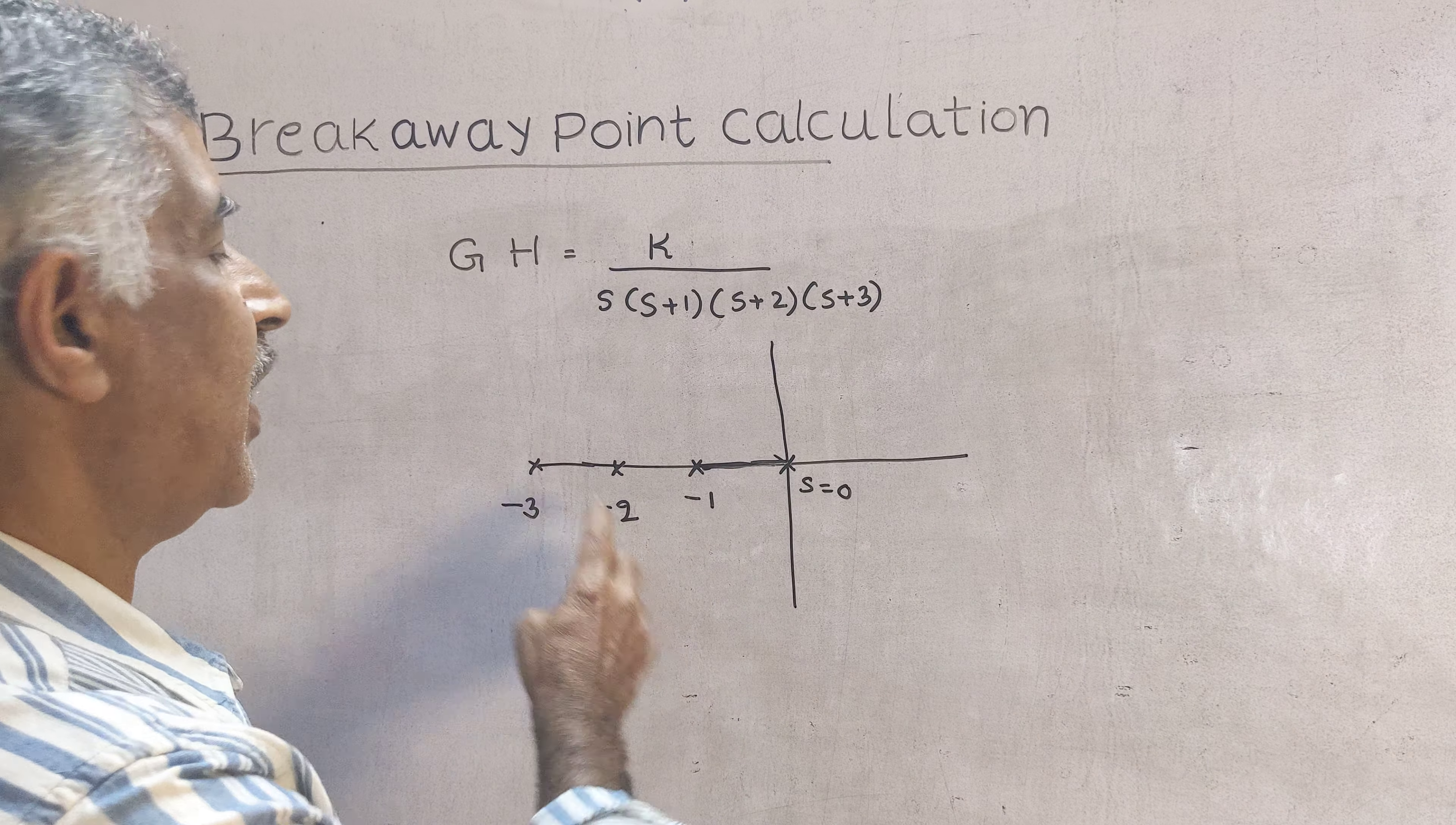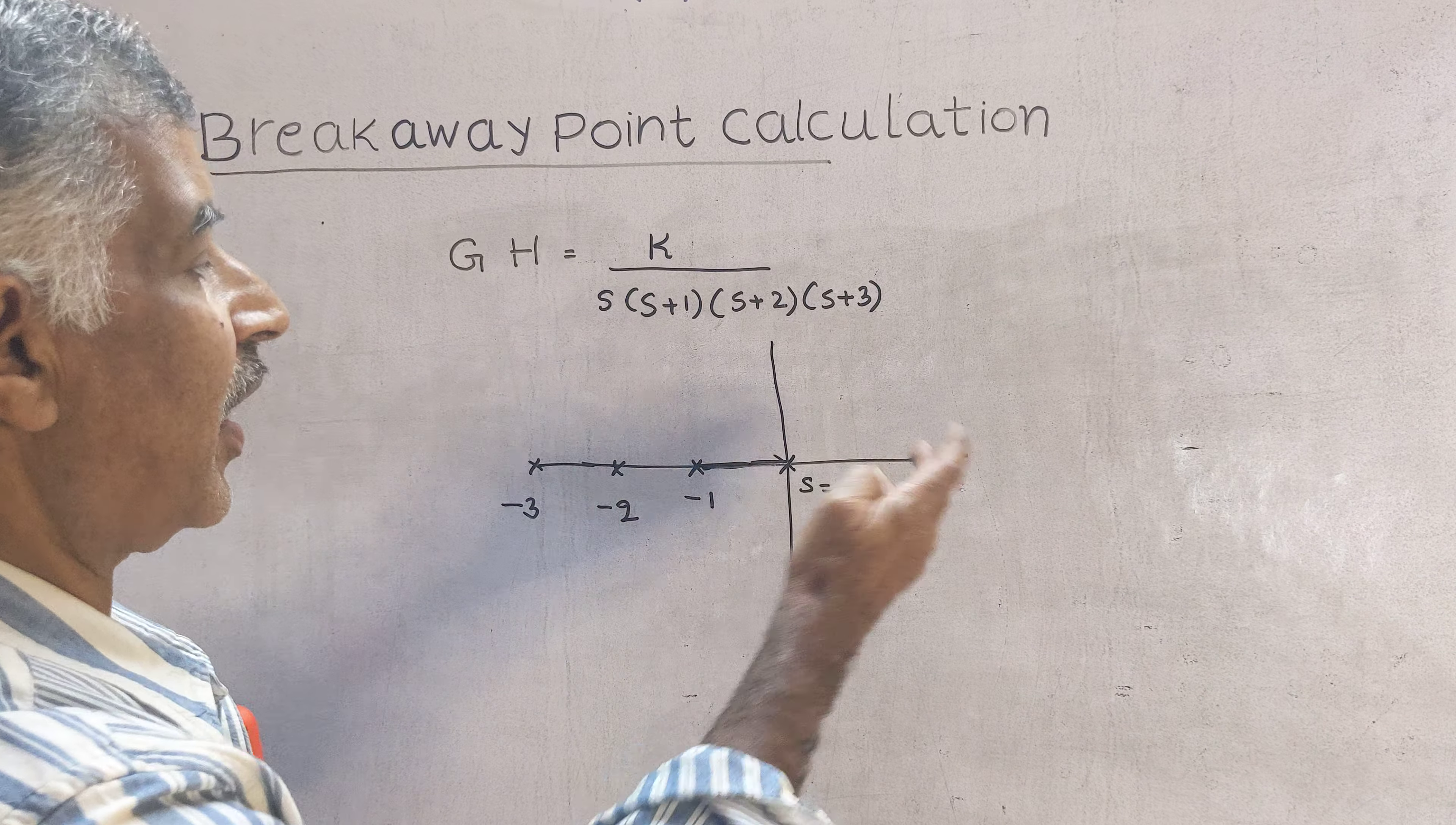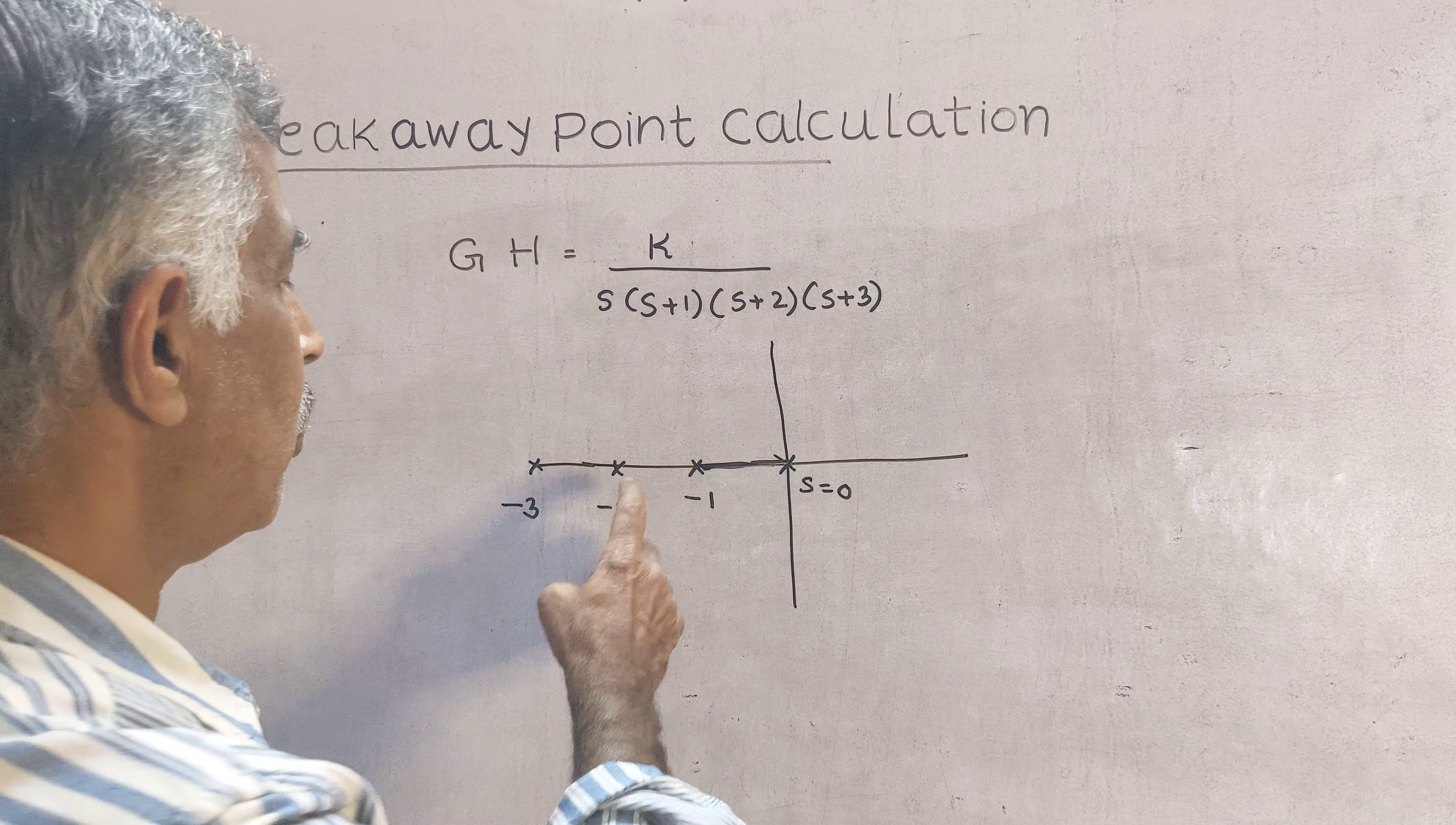Next between minus 1 and minus 2 there cannot be root locus. The reason is for these points to their right the number of poles is 2. Therefore no root locus.